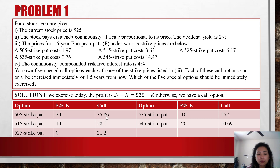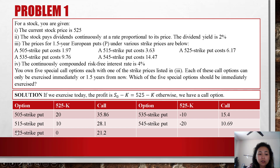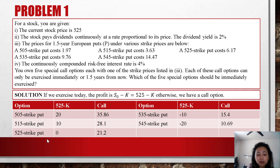Similarly, for the second put option, the 515-strike put: if we exercise today we get $10, but if we exercise 1.5 years later we get $28. Exercising later is more beneficial. For the third option, the 525-strike put: if we exercise today we have no profit, but if we exercise 1.5 years later we get $21.20, so it is more beneficial to exercise 1.5 years later.